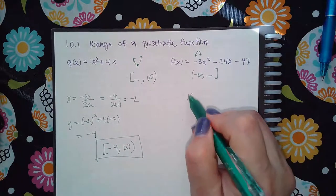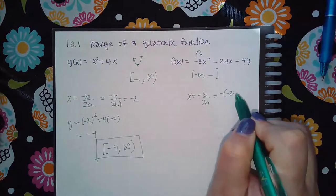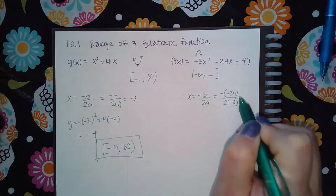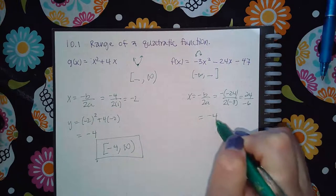Over here, same thing. x is negative b over 2a, which is negative of negative 24 over two times negative three, which is 24 over negative six, which is the x-value negative four.